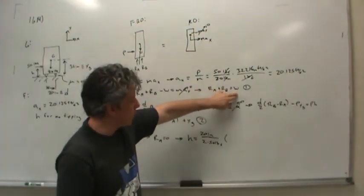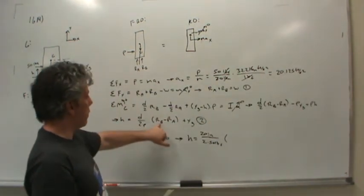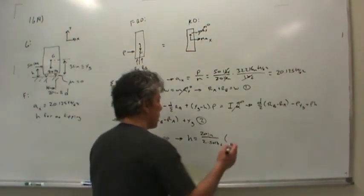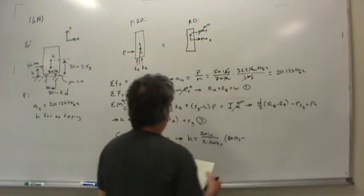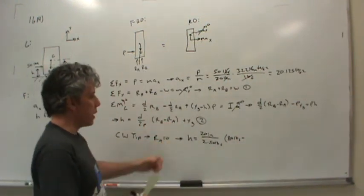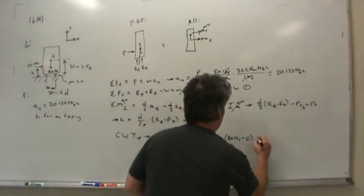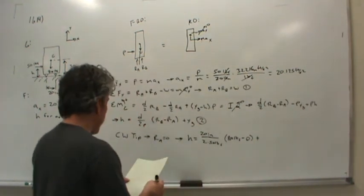So this rb would just be the weight, which is 80 pounds of force, minus ra, but we already said ra is zero,